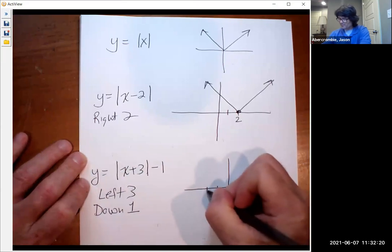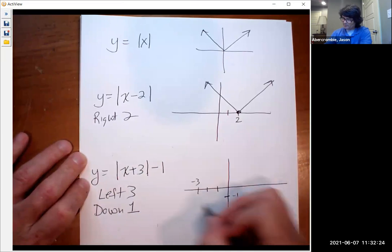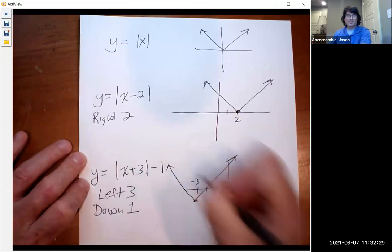I have a video about translations if you need some help with that. Left three down one, your V shape is right here. And it looks like that kind of.